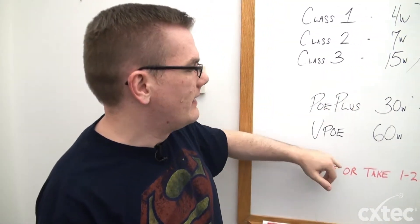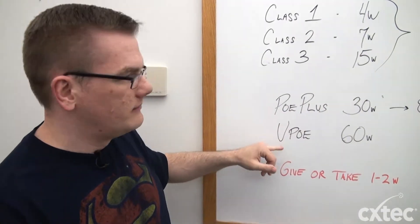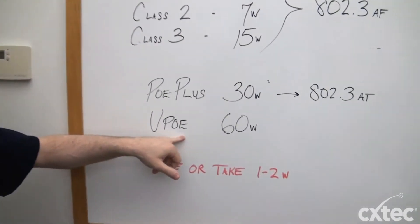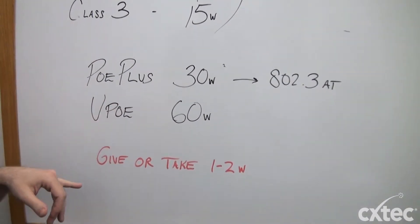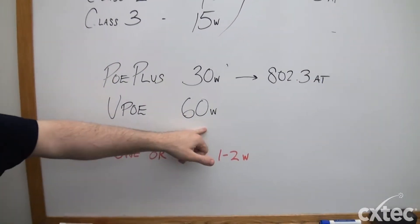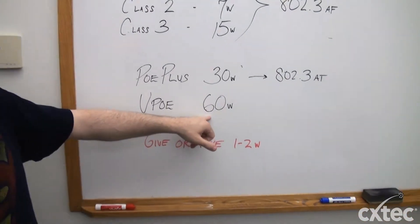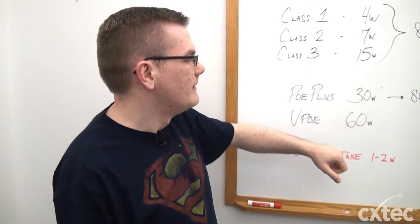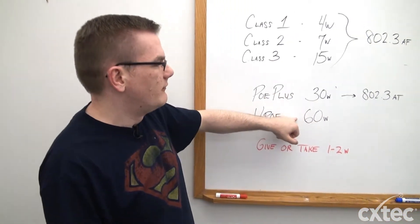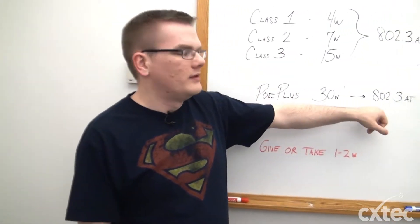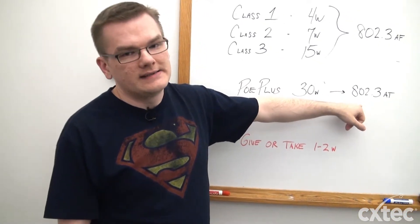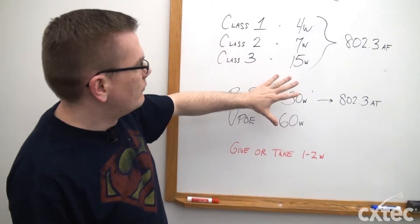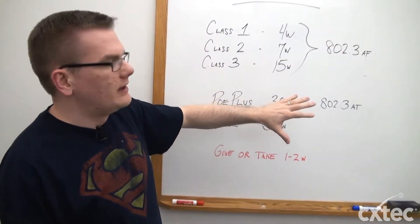That actually folds into something you might not be very familiar with: Universal PoE, or UPoE. It's a Cisco proprietary PoE standard boasting up to 60 watts — the reality is more like 51 watts, but 60 watts is the marketing number. It's really meant to be a doubling of PoE Plus, and it claims to still be compatible with the 802.3at standard. Hopefully this brings everything together, and we can look at a real-world example.